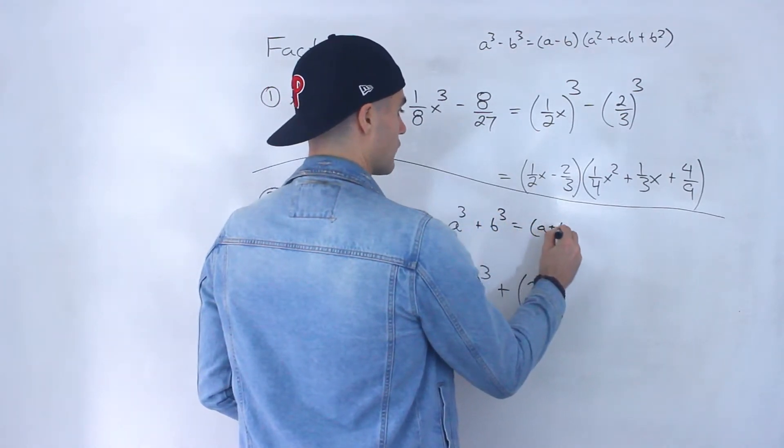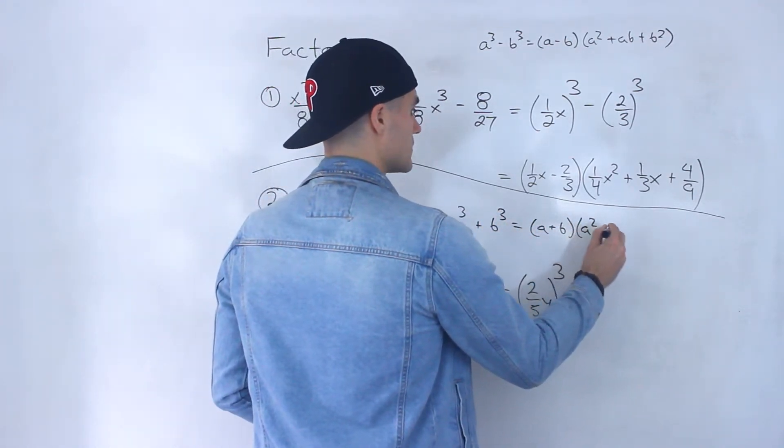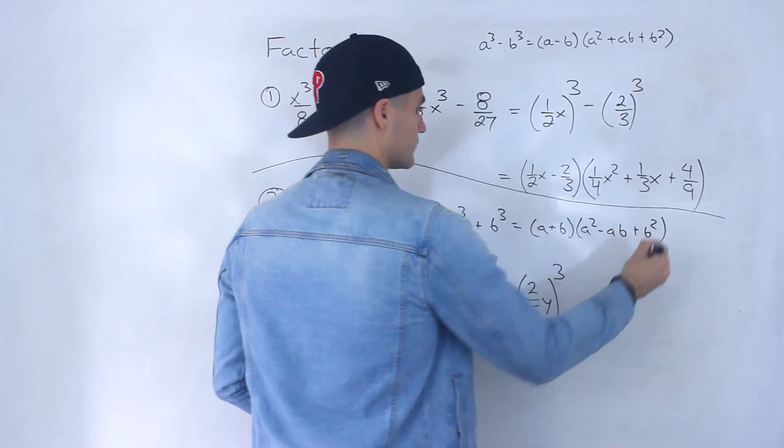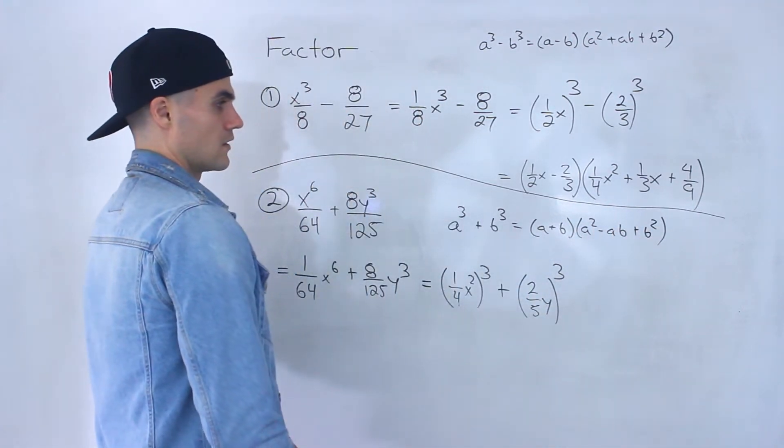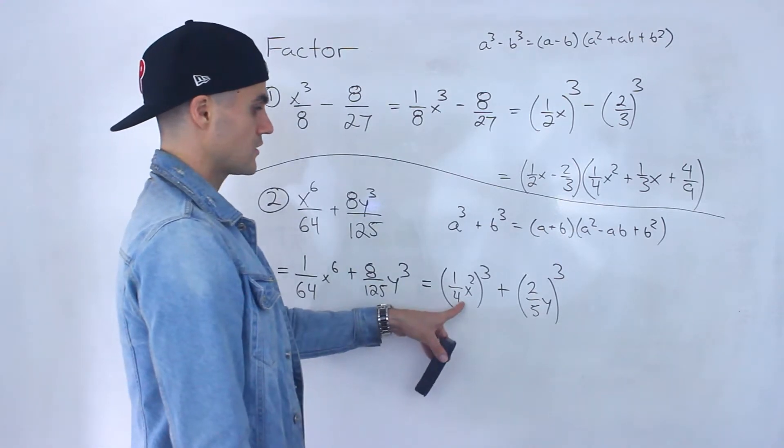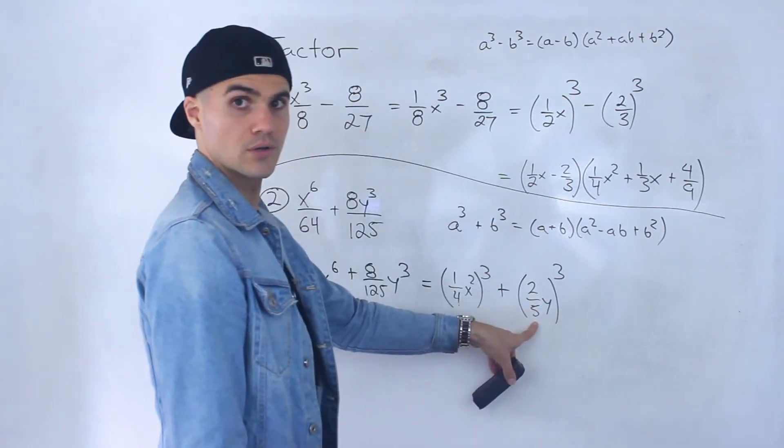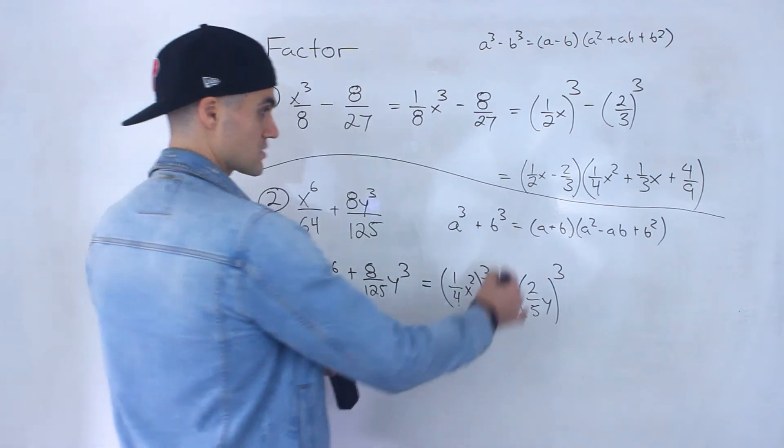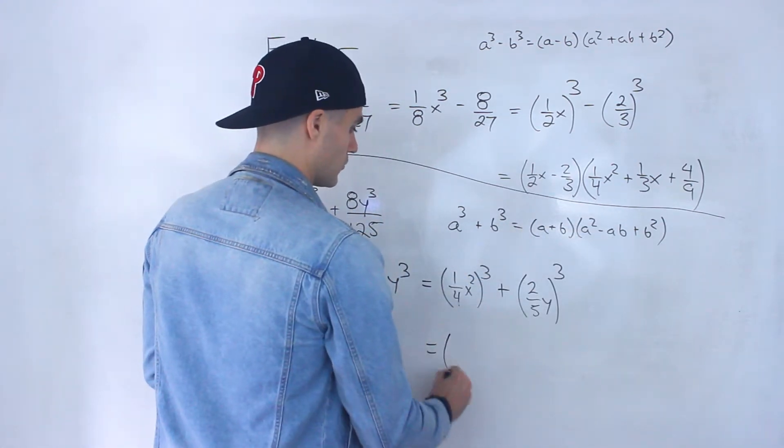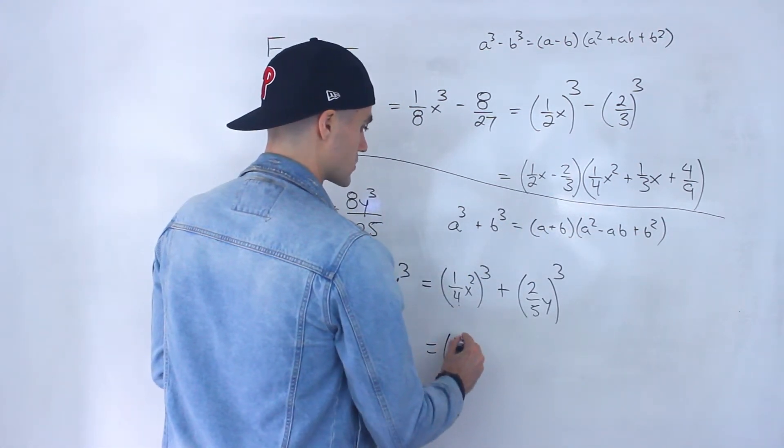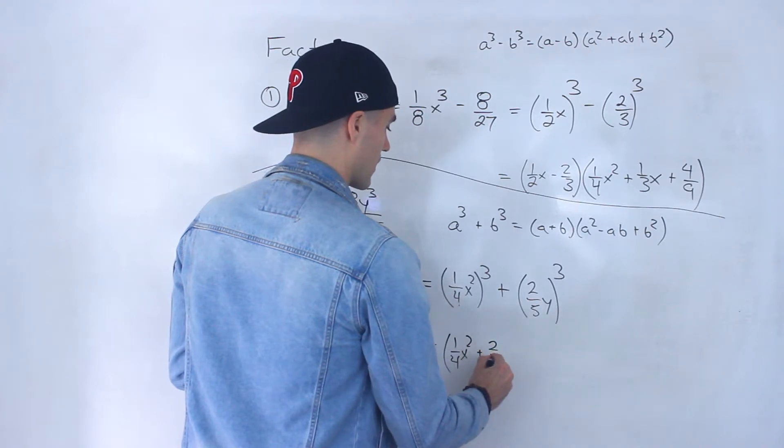And we know that formula is this. Okay? So basically the a value is this. The b value is that in the brackets. And so using this formula, we would end up with 1 over 4x squared plus 2 over 5y.